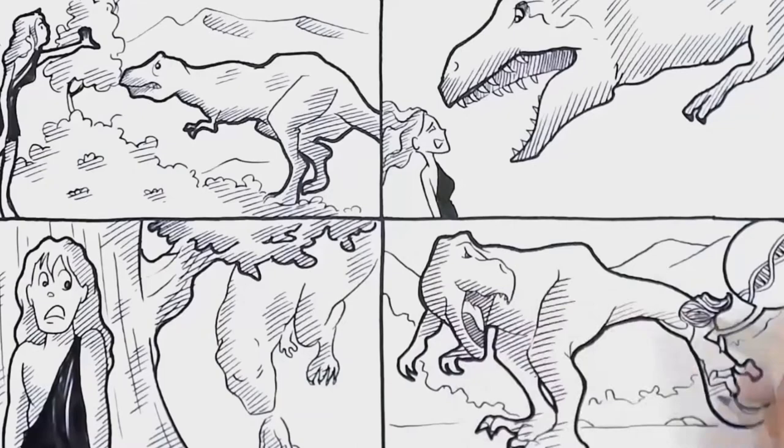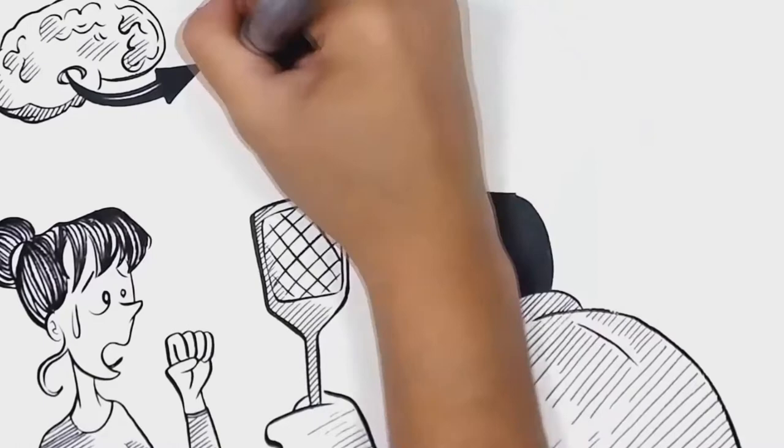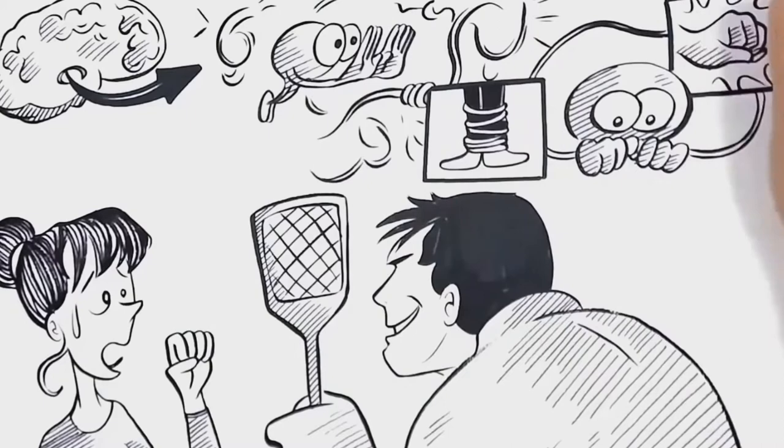But something else happens. When it gets dangerous, a specific region of our brain, the amygdala, takes over. Its job is to protect us and save our life. To act fast, it refrains us from thinking and leaves us with only those three options. This makes creative and critical thought processes impossible.